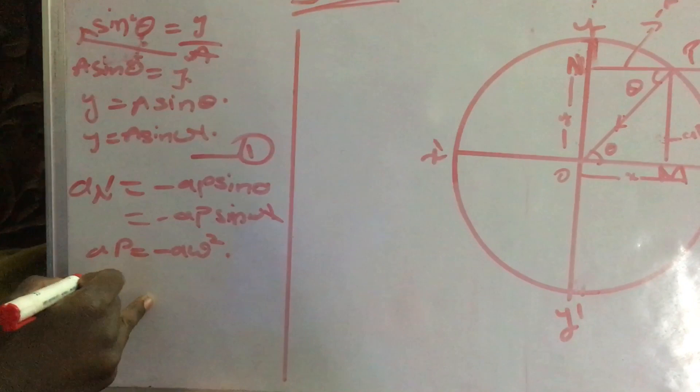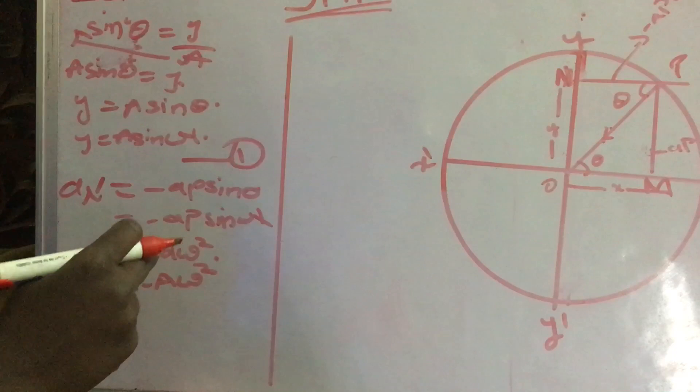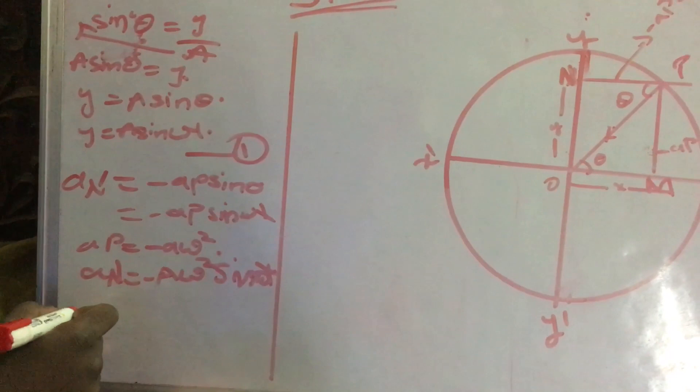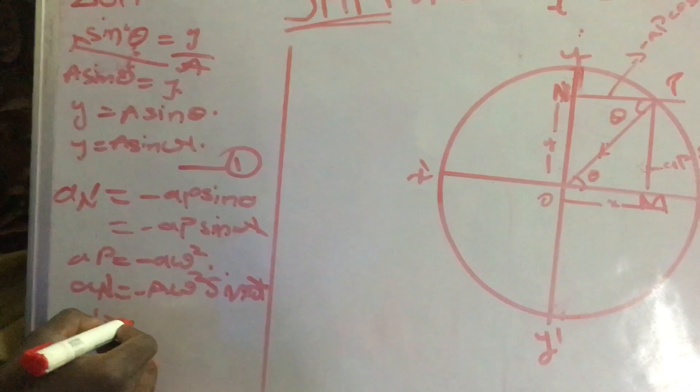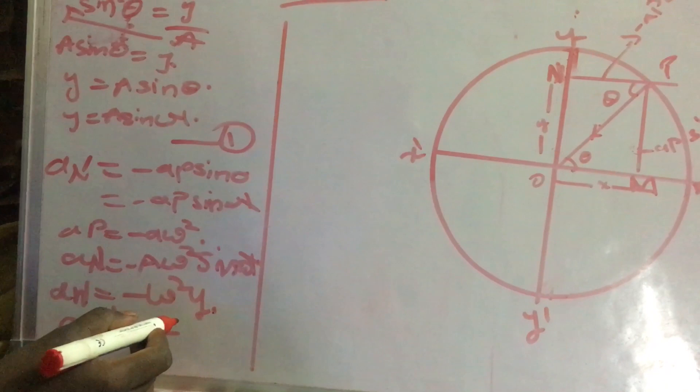Next, AN is equal to minus A omega square sin omega t. Finally, AN is equal to minus omega square y. This means AN is directly proportional to y.